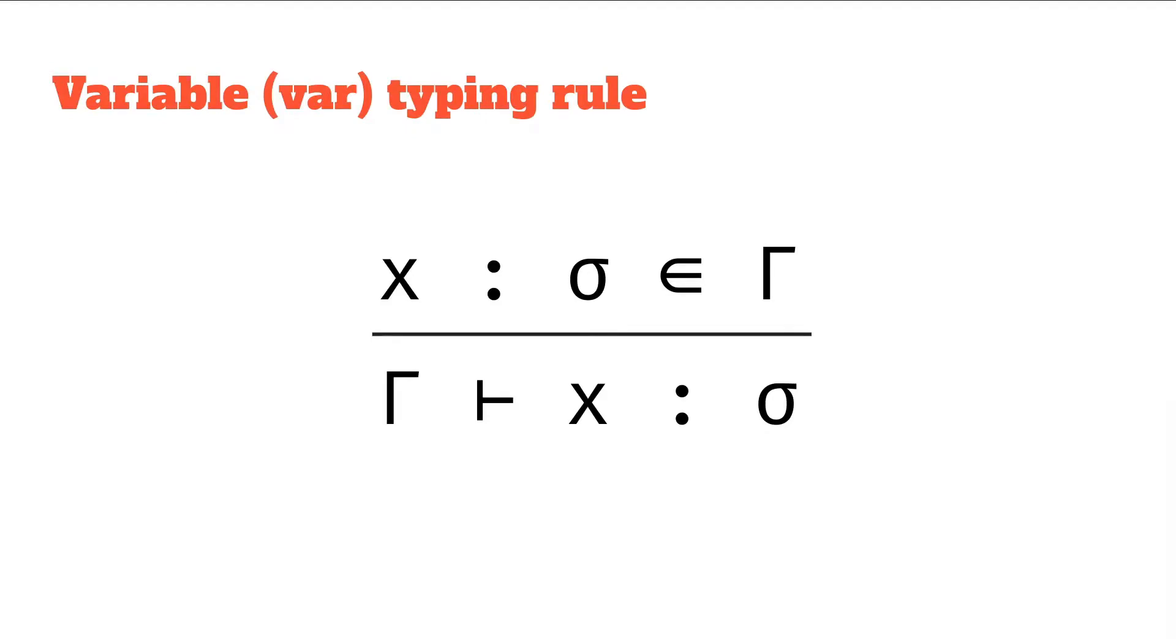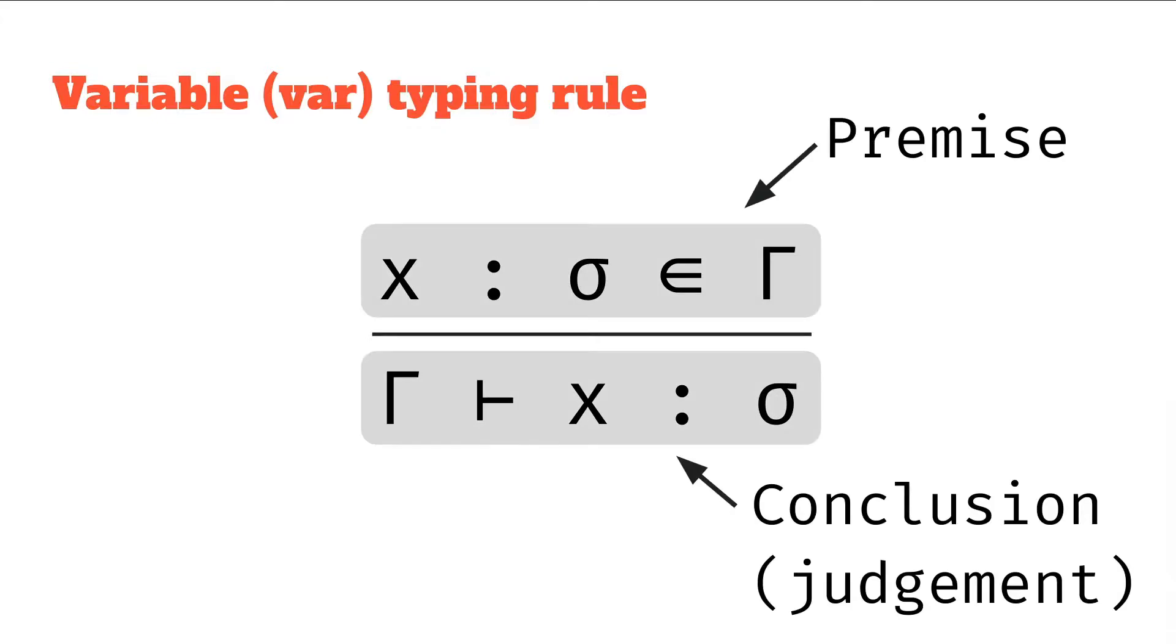It looks a bit scary at first, especially laid out like this, but let's break it down into its two component parts. From our syntax of context and rules and predicates, we can say the top part is a premise and the bottom part is a conclusion or judgment.